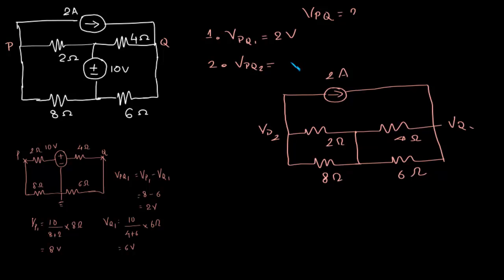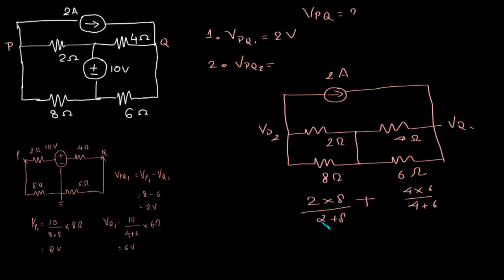For case 2, we need vpq2. With 2 ampere flowing, the equivalent resistance of the circuit: 4 and 6 ohm are in parallel, giving 4 × 6 / (4 + 6) = 2.4 ohms. This is in series with 2 and 8 ohm in parallel, giving 2 × 8 / (2 + 8) = 1.6 ohms. Total equivalent resistance = 1.6 + 2.4 = 4 ohms.